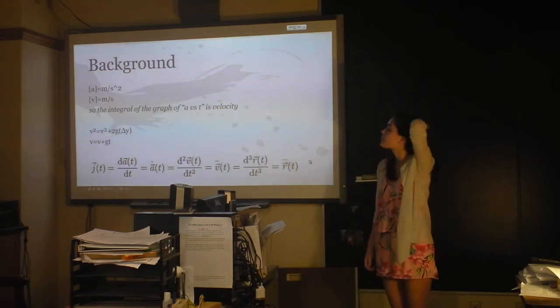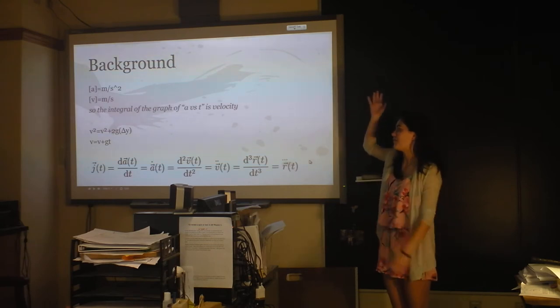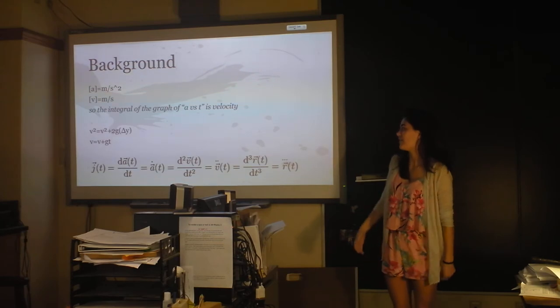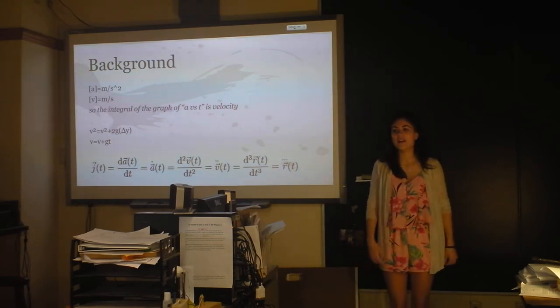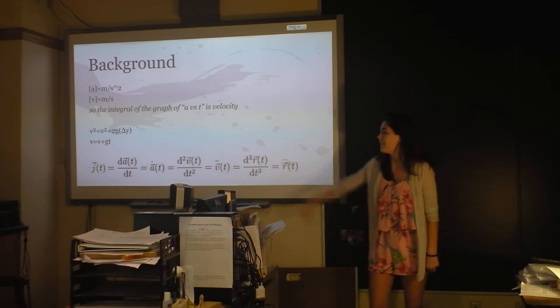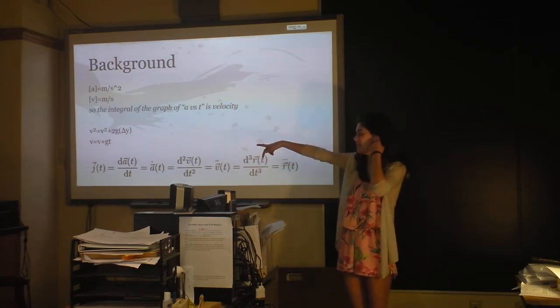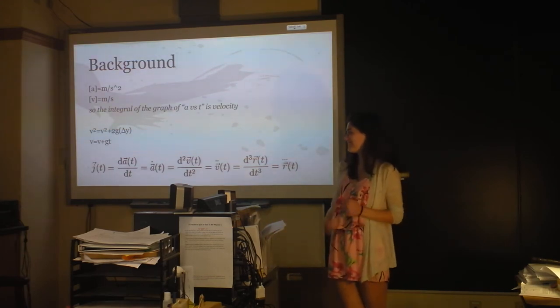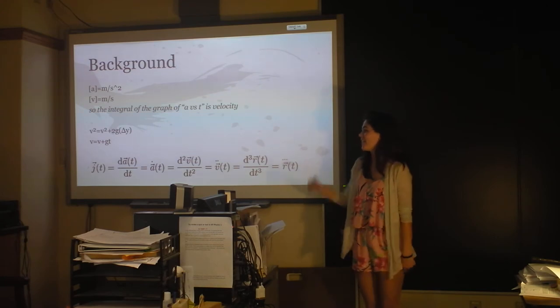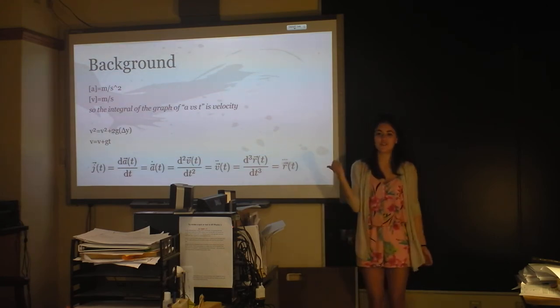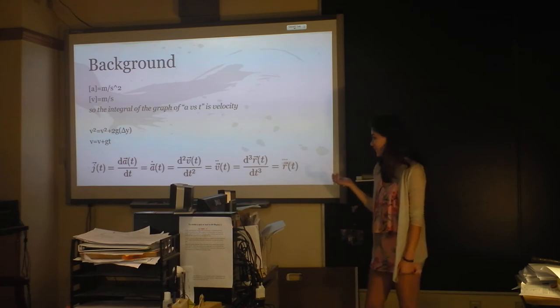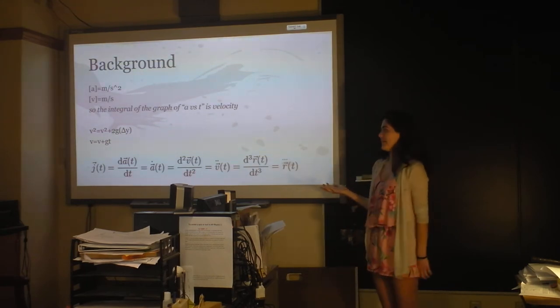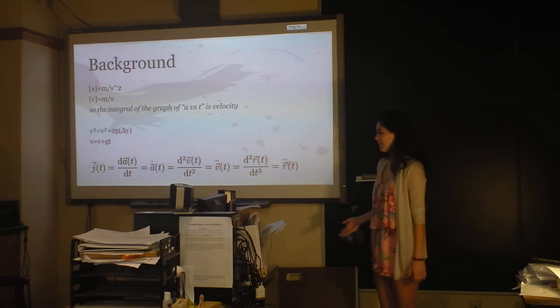Okay, so background. The units of acceleration are meters per second squared, whereas the units of velocity are meters per second. So the integral of an acceleration versus time graph is velocity, so that's how we got speed. And then, from the videos, it's just exit velocity with the analysis, video analysis, and then the kinematic equations. And then this is the equation for jerk, which we didn't do in class, because it's kind of confusing. But jerk is just change in acceleration, which is really apparent in my graph, so I put it in, even though I didn't really use it that much.